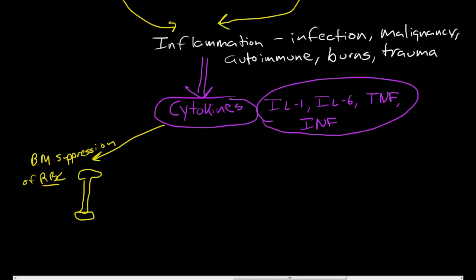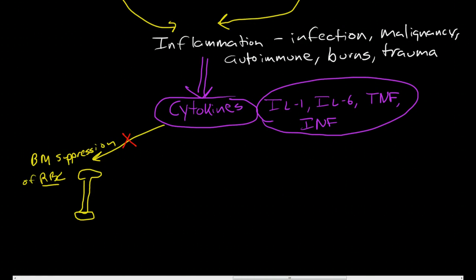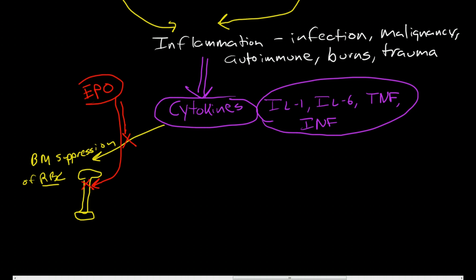And this occurs because the cytokines make the bone marrow insensitive to EPO. So actually, I should draw it like this. The bone marrow becomes insensitive to EPO, so it can't rev up those myeloid precursors to make red blood cells.